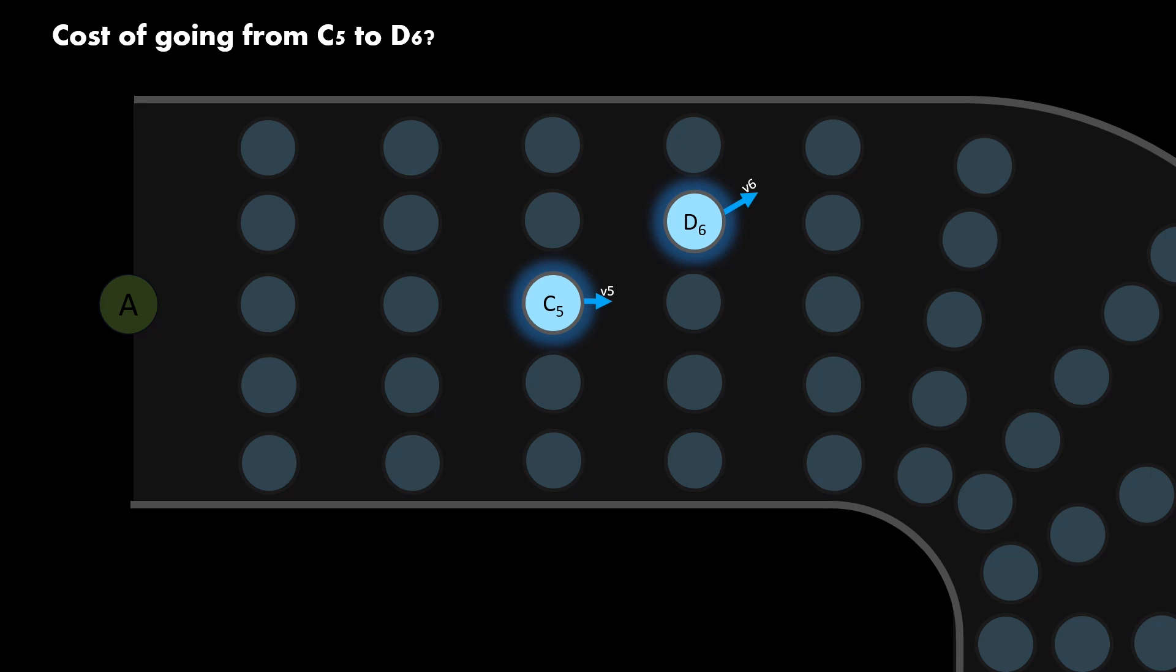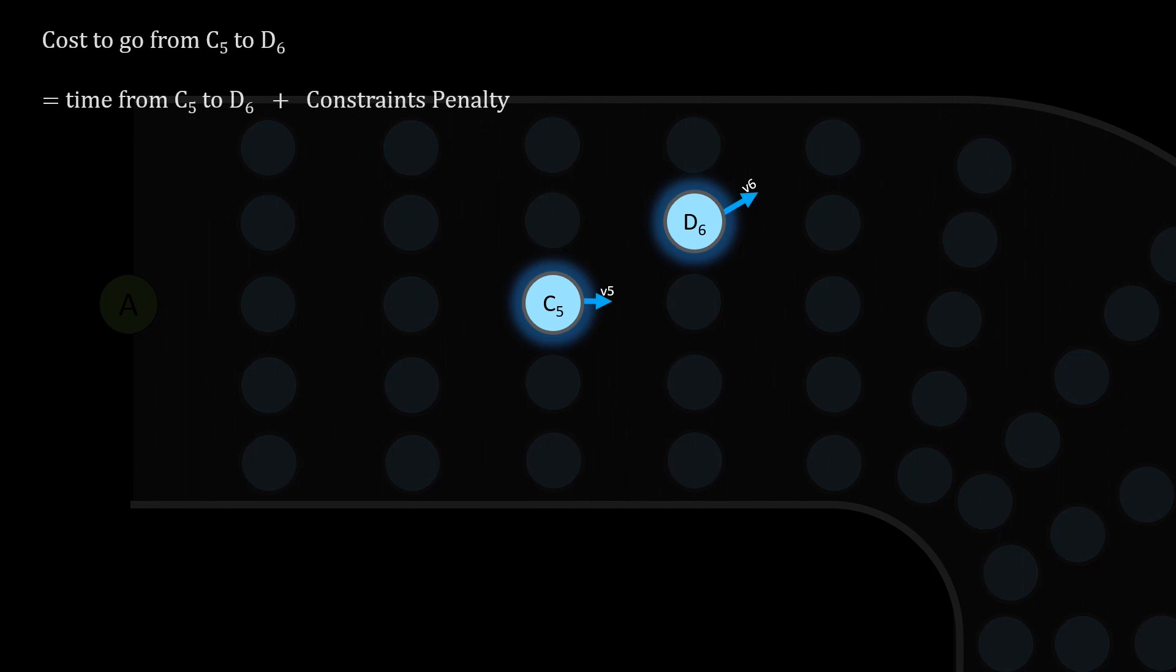To be able to apply dynamic programming algorithm we need to be able to find the link cost, that is the cost to go from C5 to D6. The cost of going from C5 to D6 can be divided into two components. First one is the time consumed. It makes sense to have time in our cost since we want to minimize it to go fastest. Second component is cost related to constraints of car physics.